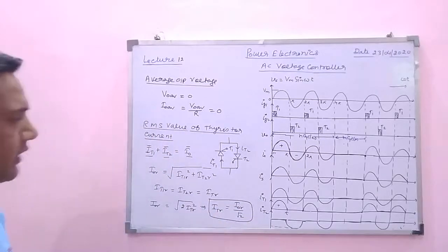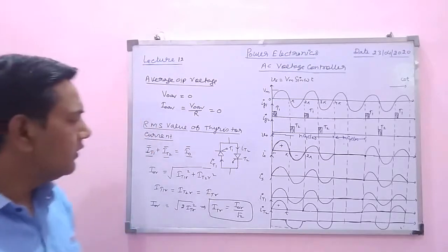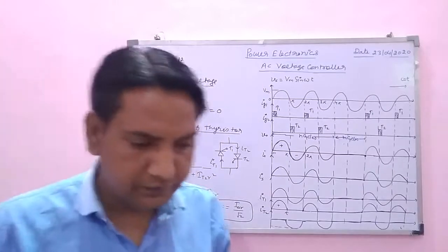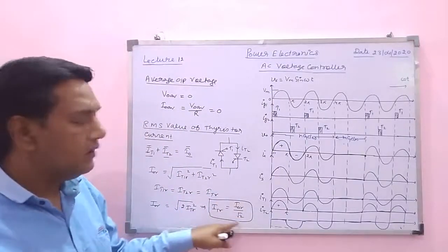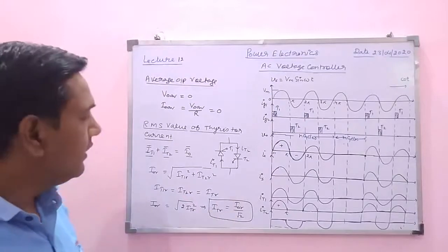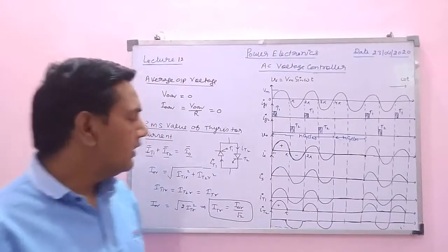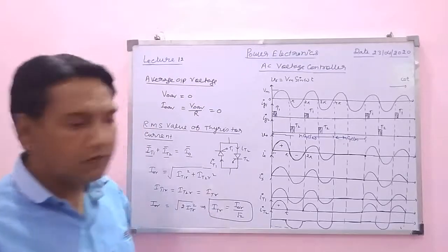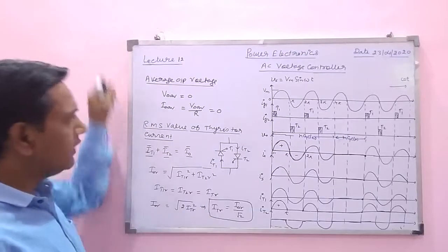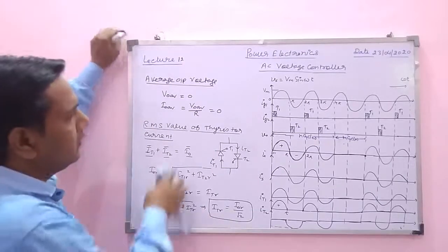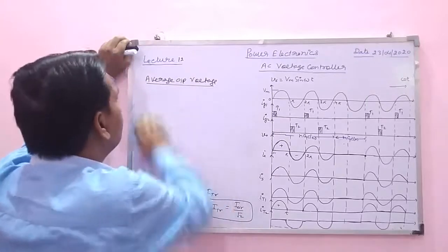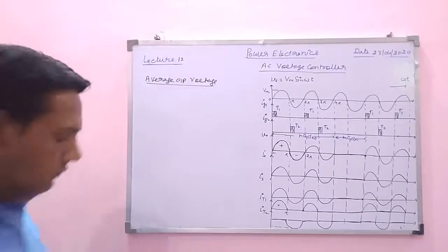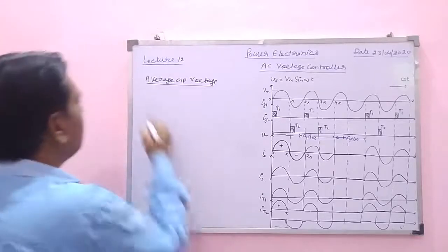So the RMS value of thyristor current is ITR equals I_naught_R divided by root 2. And I_naught_R is equal to V_naught_R divided by R, where V_naught_R equals the square root of the duty cycle times the RMS value of the supply voltage, as we derived earlier. In this way we can calculate the RMS value of thyristor current. Next we will see the average value of thyristor current.